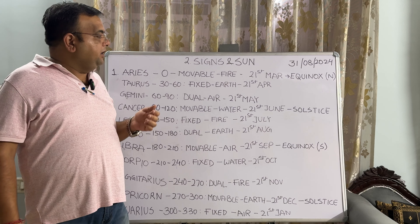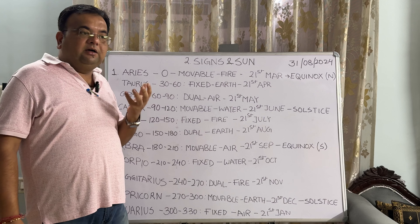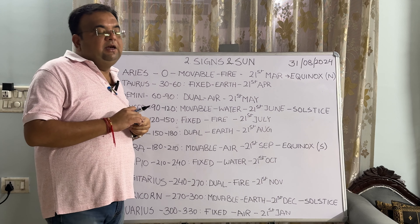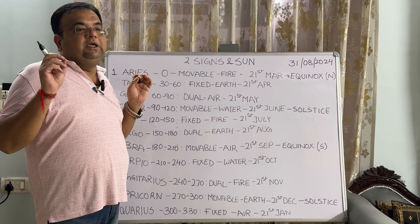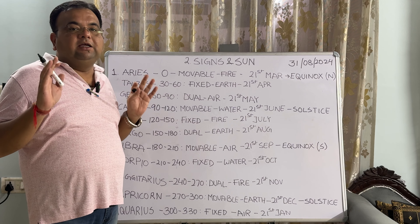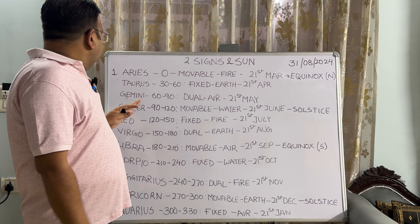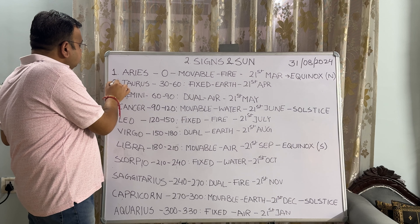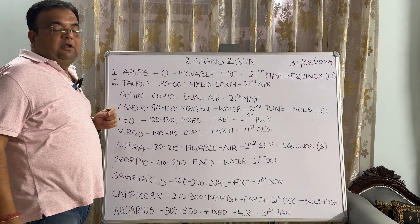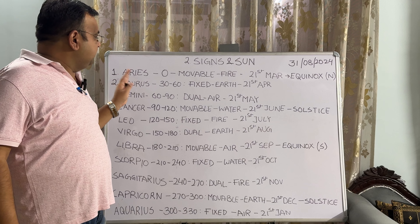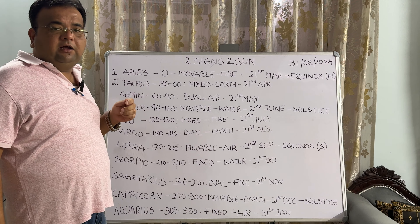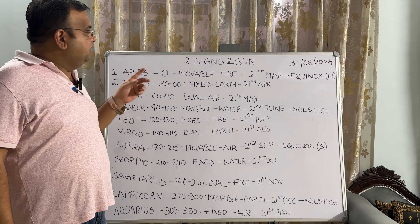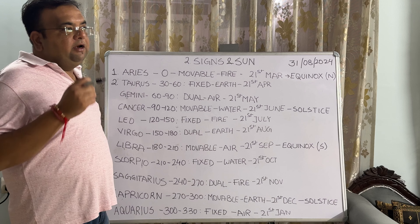What is an equinox? An equinox is a day wherein the length of the day and the length of the night is exactly the same. The second sign is Taurus. Taurus extends from 30 degrees to 60 degrees. It is fixed in nature and the sun enters into Taurus on the 21st of April.